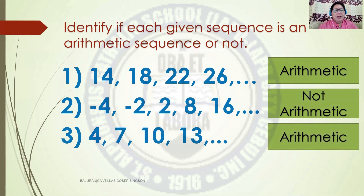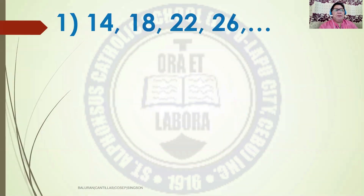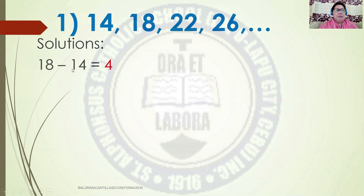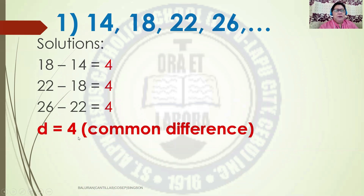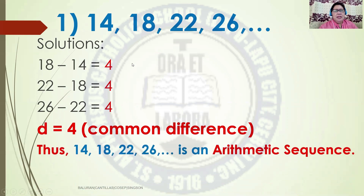Let us have the solutions. Given 14, 18, 22, 26, and so on. Taking the difference: 18 minus 14 is 4, 22 minus 18 is 4, 26 minus 22 is 4. Therefore the difference is 4, so we have a Common Difference, which means the sequence can be considered an Arithmetic Sequence.